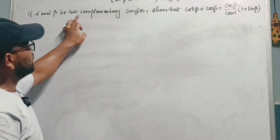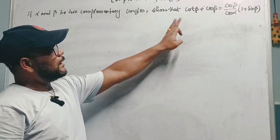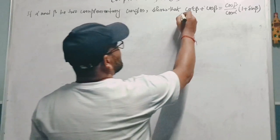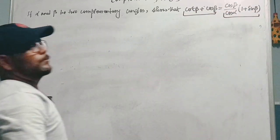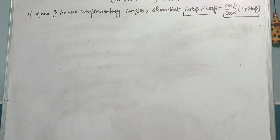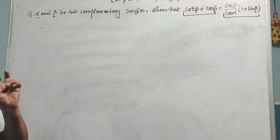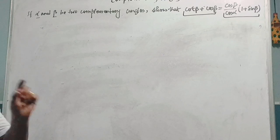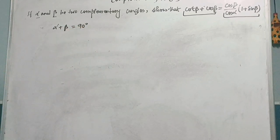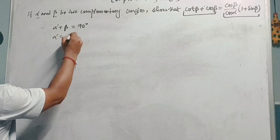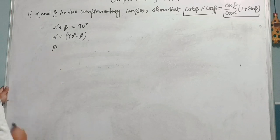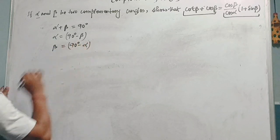Next question: if alpha and beta are two complementary angles, prove that cot β + cos β = (cos β / cos α) × (1 + sin β). Since alpha and beta are complementary, alpha + beta = 90°. Therefore, alpha can be written as 90° − beta, and beta can be written as 90° − alpha.